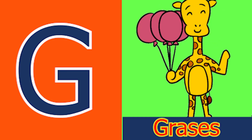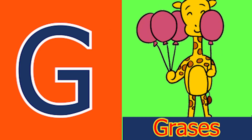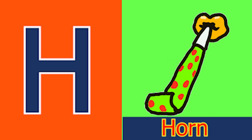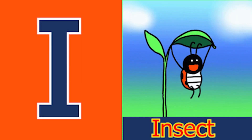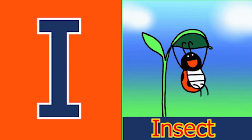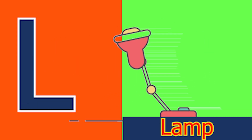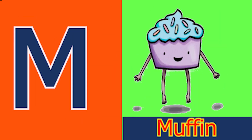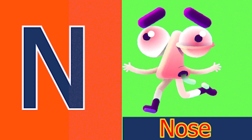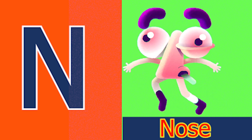G for glass and H for horn. I for insect, J for jam, K for TV, L for lamb, M for mud, N for nose.